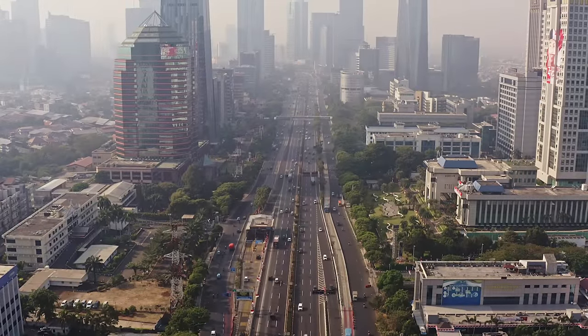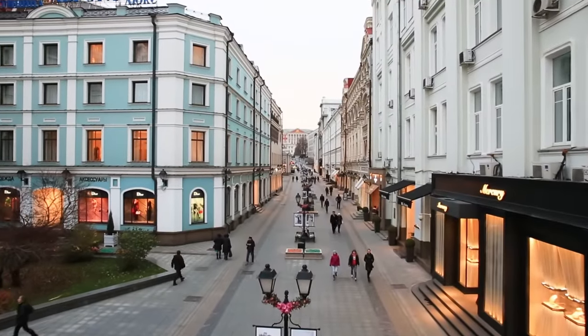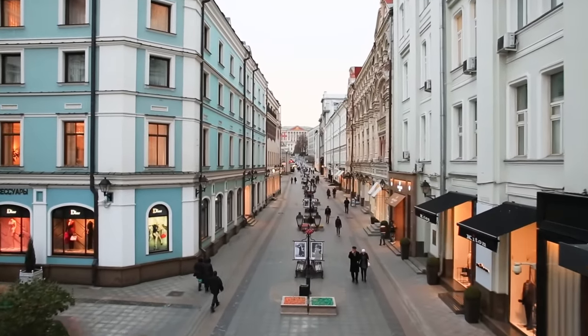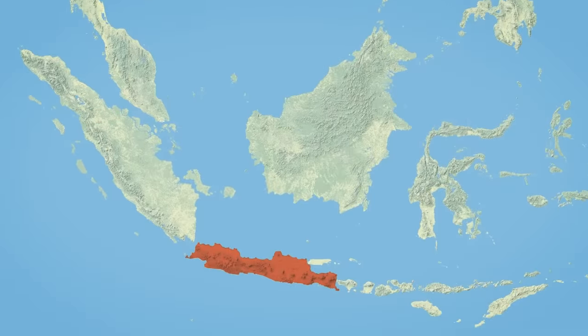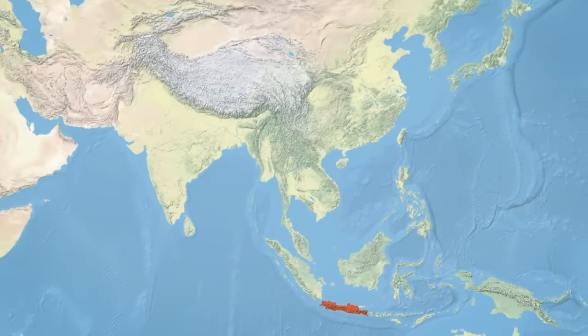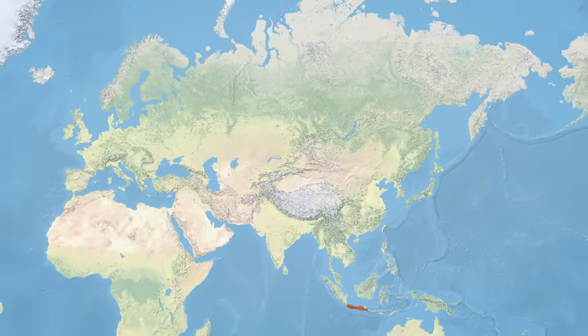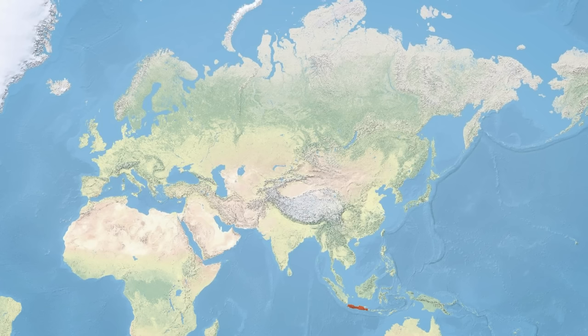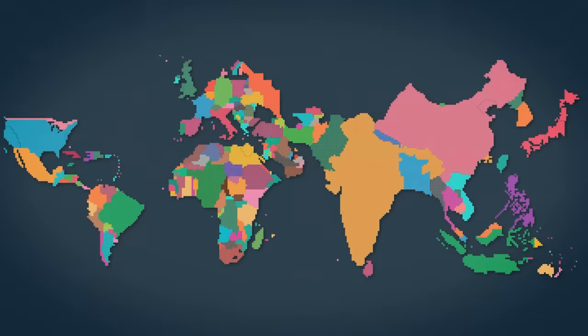Some small countries have huge populations, while some big countries have tiny ones, and the differences can sometimes be completely baffling. For example, this small island in Indonesia called Java is home to more people than the entire country of Russia, and yet it's difficult to conceptualize this on just a mere geographic map like we're currently looking at right now. In order to visualize how big or small a country or place is in terms of people, we have to look at a radically different map, like this one that was created by Visual Capitalist back in 2018. The link to this map is going to be linked down in the description if you want to go check it out and see for yourself.